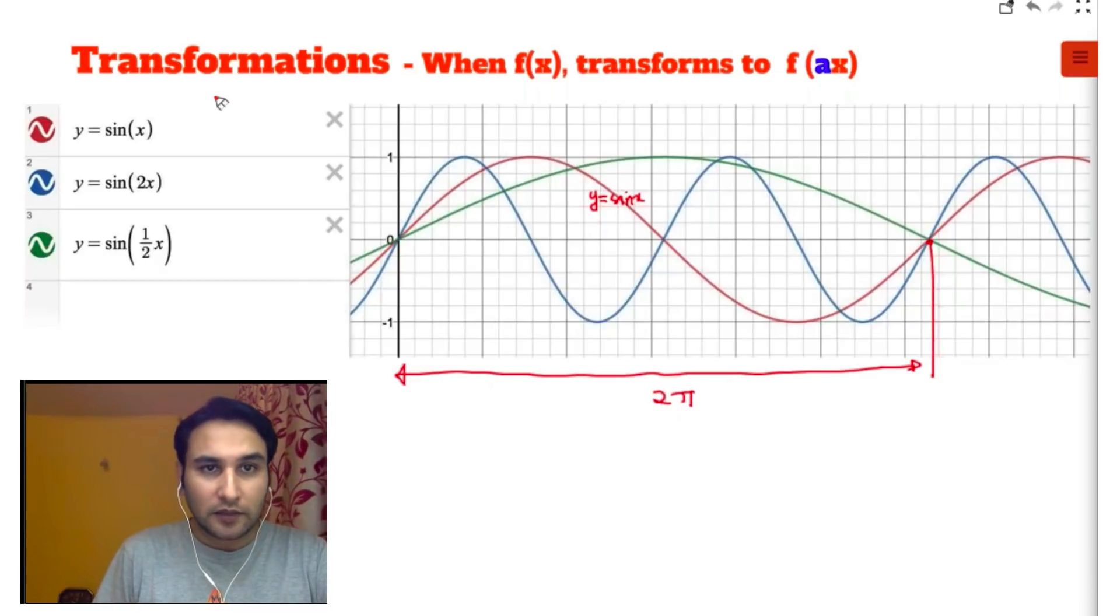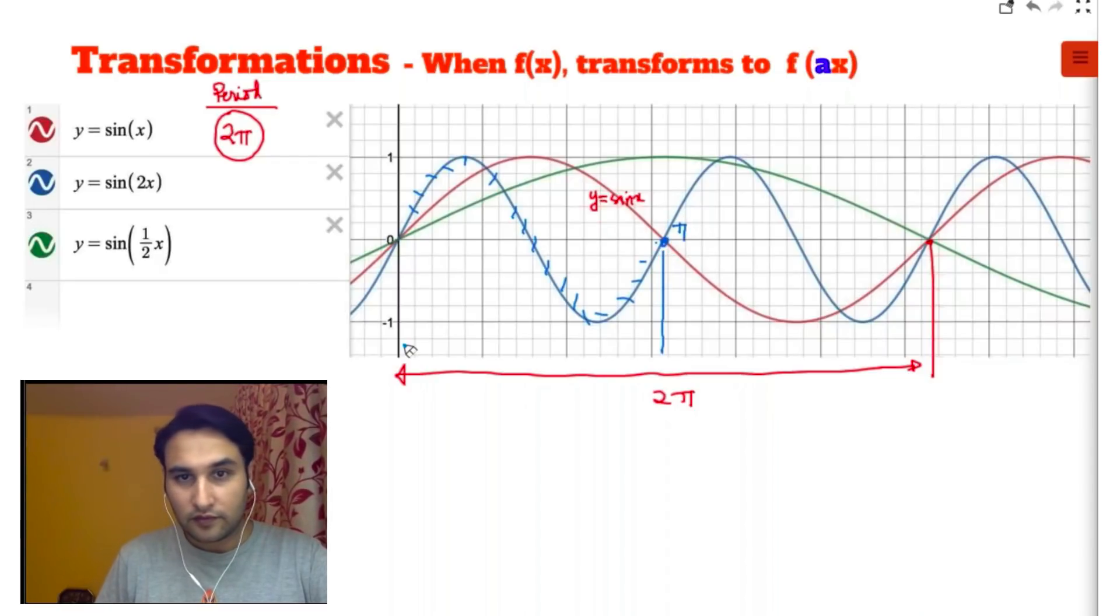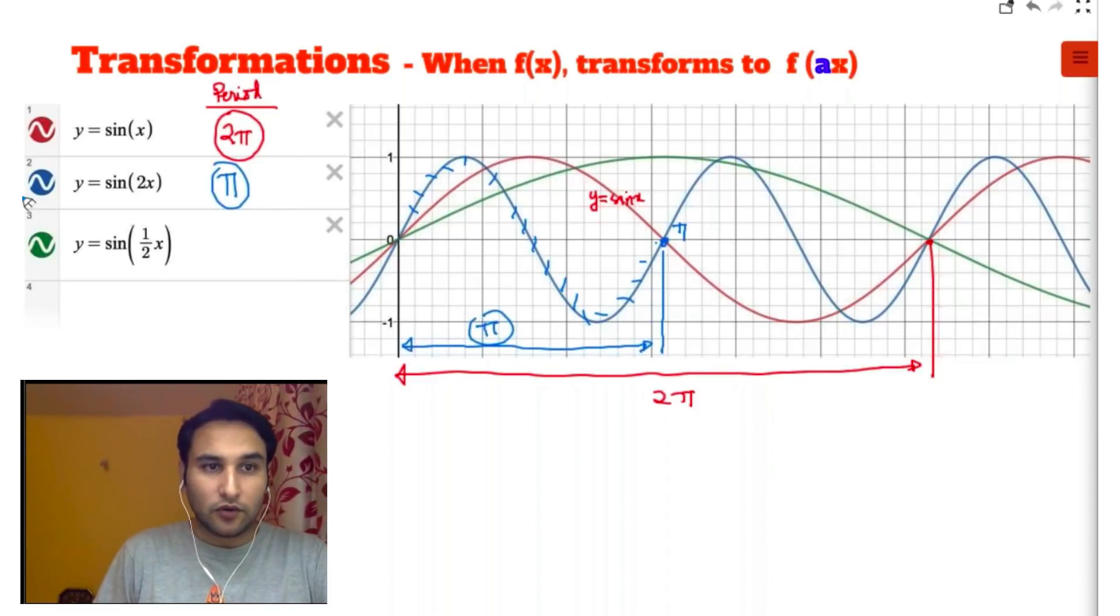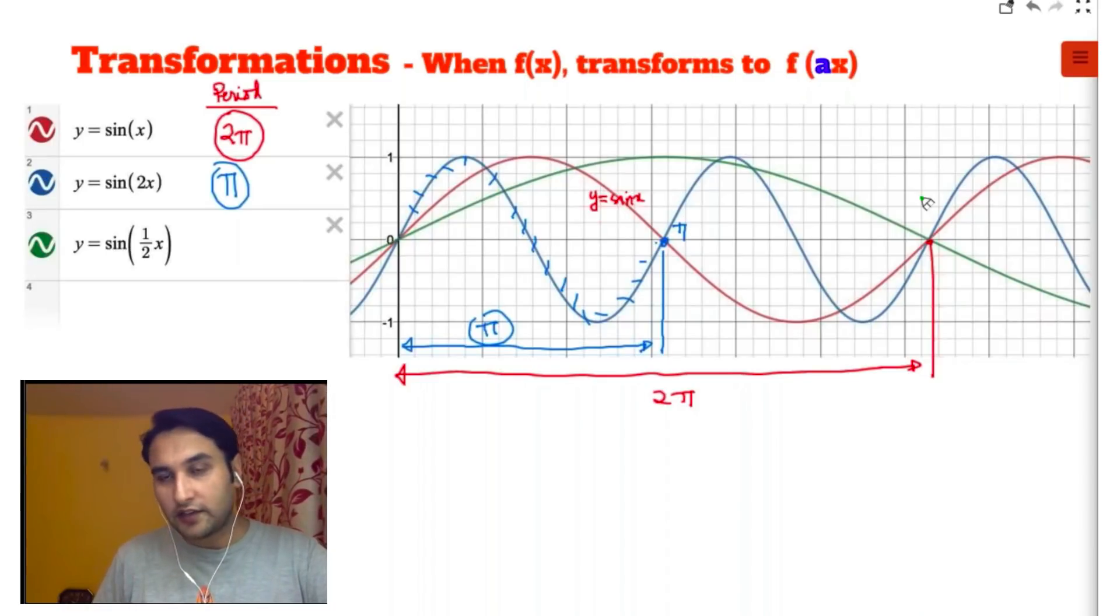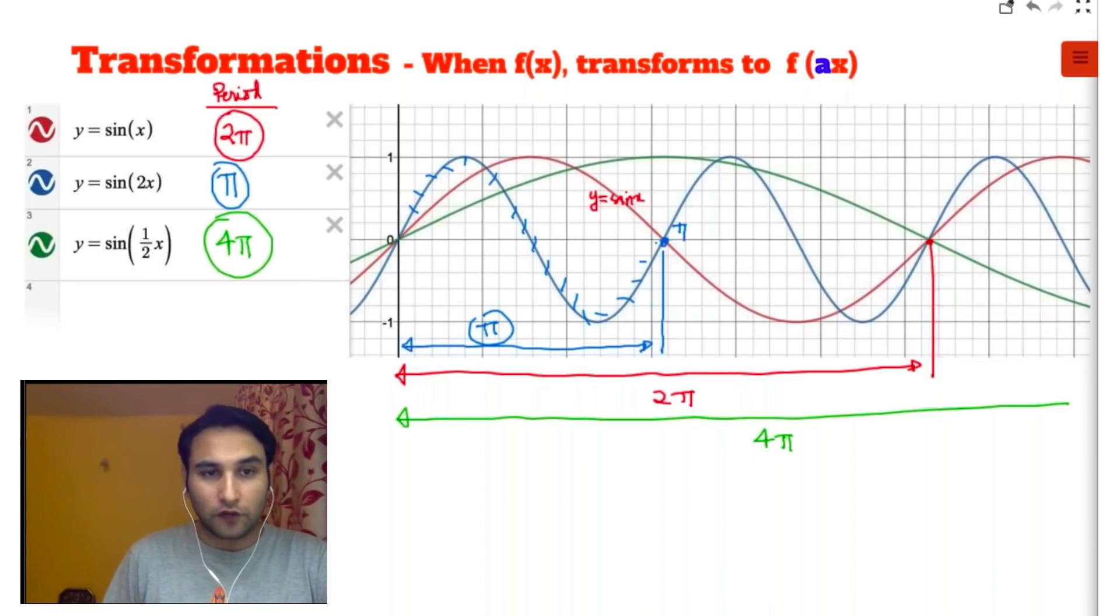So let me write the period. The period is 2π. Note very, very carefully what I'm doing. Now look at the blue graph. The blue graph is completing its one cycle at π. This point is π, so the period is π. Now look at the green graph. It is completing its one cycle at 4π, so the period here is 4π. Now let me tell you a formula. All of you please note down the formula.